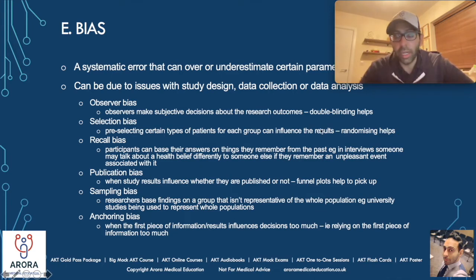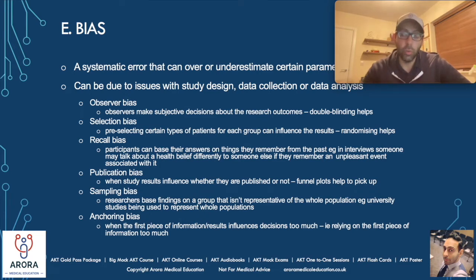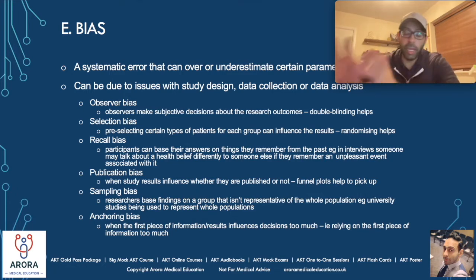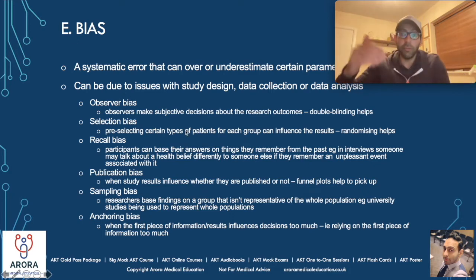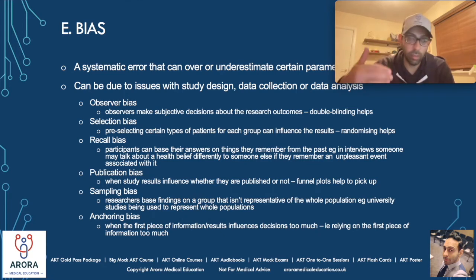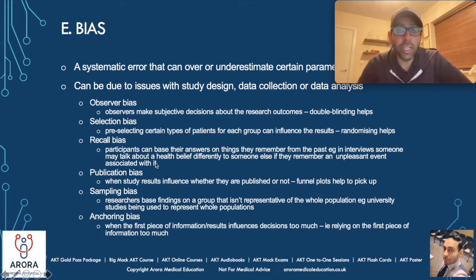If you're carrying out a study and you don't know who's gone into which batch — say you've got placebo versus drug and you know which patients have gone into which batch — then maybe you're going to make subjective decisions based on that knowledge. Whereas if you double-blind, you don't know which patient has gone into which group, so it reduces the impact of bias coming from the observer of the outcome. This removes observer bias. Selection bias involves pre-selecting certain types of patients for each group, which can influence the results.